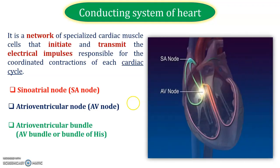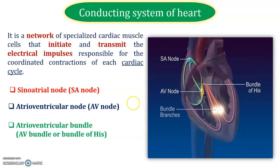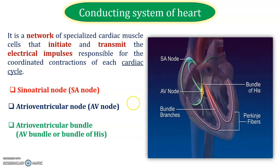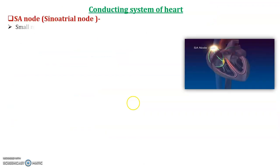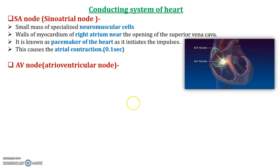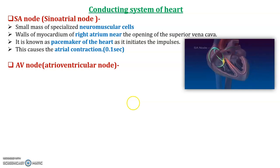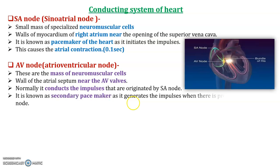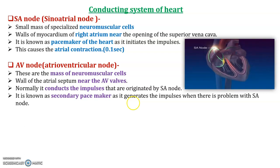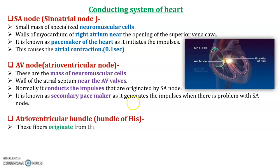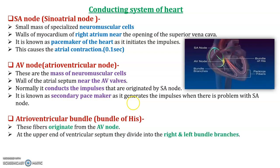The conducting system of the heart depends on three important parameters: the SA node, AV node, and atrioventricular bundles. The SA node is present at the opening of the right atrium and is also called the natural pacemaker or primary pacemaker of the heart — it requires around 0.1 seconds for contraction of the atrium. The AV node is the secondary pacemaker — it transfers impulses from the SA node. The atrioventricular bundles originate from the AV node and are present at the bottom part of the heart, below the ventricles.